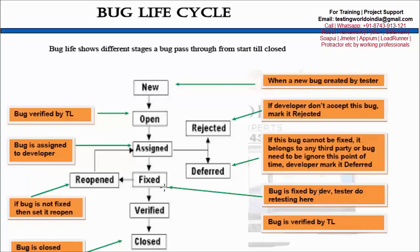If the developer fixed the bug, as a tester we got the build and confirmed the bug is fixed — I will set it 'verified'. Then my lead will verify it one more time. As a tester I mark it verified, but as a standard, my lead verifies it again. If it is really fixed, the lead will close it. That's the standard bug lifecycle.